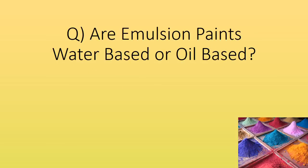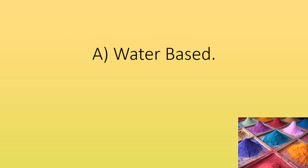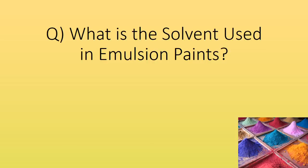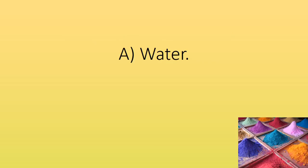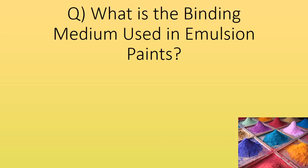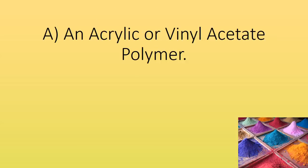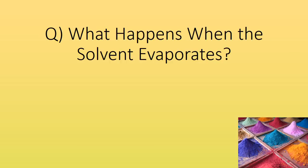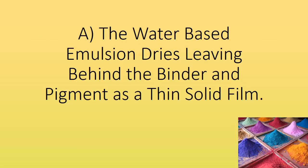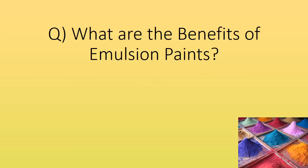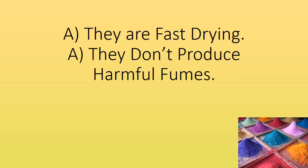Are emulsion paints water-based or oil-based? Water-based. What is the solvent used in emulsion paints? Water. What is the binding medium used in emulsion paints? An acrylic or vinyl acetate polymer. What happens when the solvent evaporates? The water-based emulsion dries, leaving behind the binder and pigment as a thin solid film. What are the benefits of emulsion paints? They are fast drying and don't produce harmful fumes.